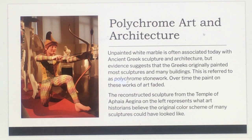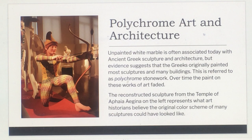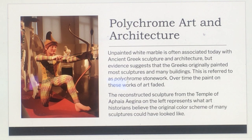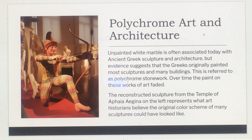Unpainted white marble is often associated today with ancient Greek sculpture and architecture, but evidence suggests the Greeks originally painted most sculptures and many buildings. This is referred to as polychrome stonework. Over time, the paint on these works faded. The reconstructed sculpture from the Temple of Aphaia, Aegina, on the left, represents what art historians believe the original color scheme of many sculptures could have looked like.